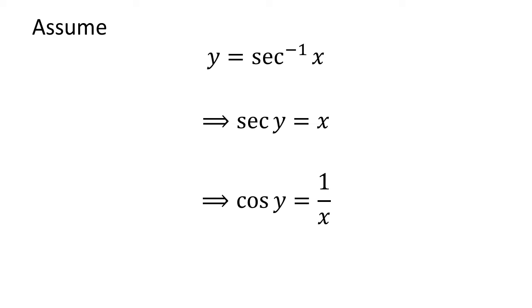Reciprocal of secant of y is equal to cosine of y. Taking reciprocal of both sides, we get cosine of y is equal to 1 divided by x.